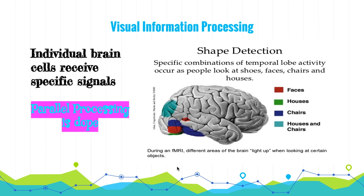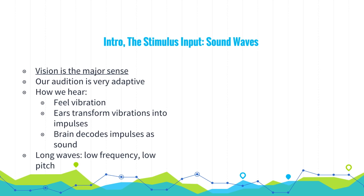Now that we've learned about vision, let's learn about another perception system — sound. Vision is the major sense, but our audition, or sense of hearing, is very adaptive. While we can hear a wide range of sounds, the sounds we hear best fall within a frequency range that corresponds to the human voice. There are three basic steps of how we hear: first, we feel vibration through both bone and air conduction; second, the ears transform these vibrations into impulses; and then the brain decodes these impulses and they become sound. Waves vary in length, frequency, and pitch — long waves have low frequency and low pitch, while short waves have high frequency and high pitch.